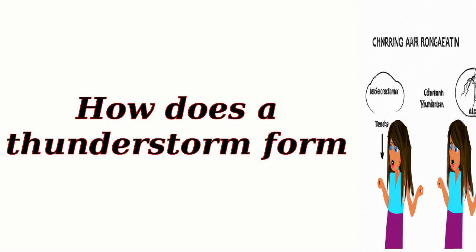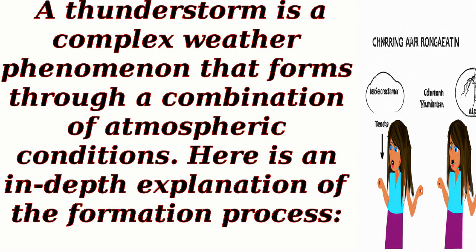How Does a Thunderstorm Form? A thunderstorm is a complex weather phenomenon that forms through a combination of atmospheric conditions. Here is an in-depth explanation of the formation process.